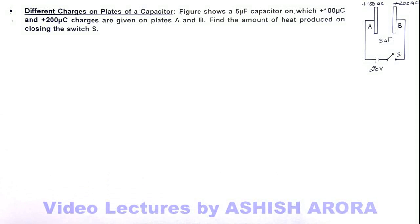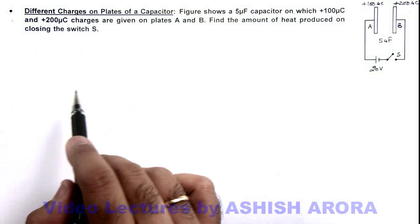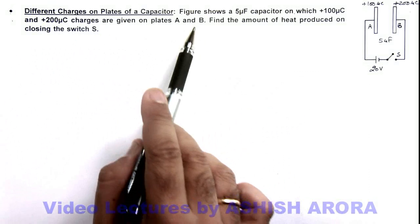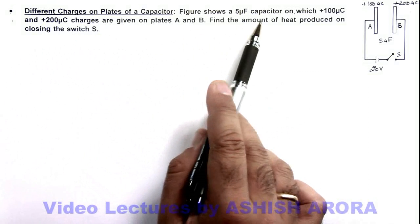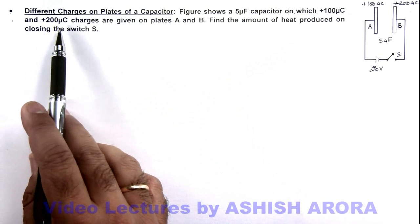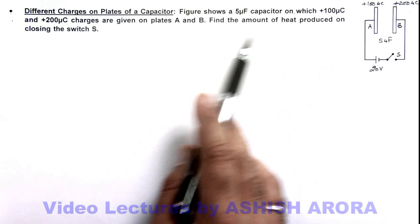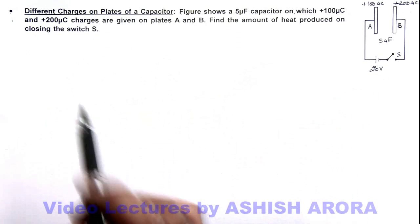In this illustration we'll see a situation where different charges are on the plates of a capacitor. Here in this figure we can see a 5 microfarad capacitor on which 100 microcoulomb and 200 microcoulomb charges are given on plates A and B. We are required to find the amount of heat produced on closing the switch S.